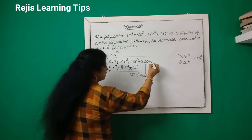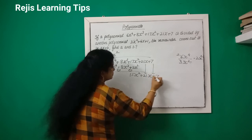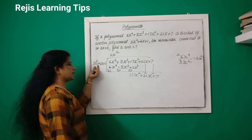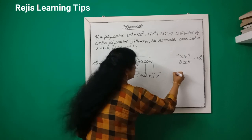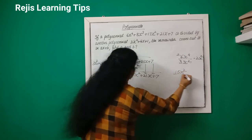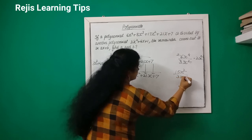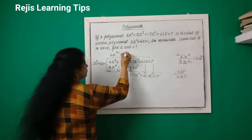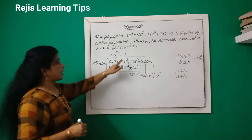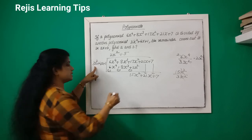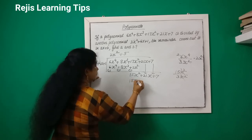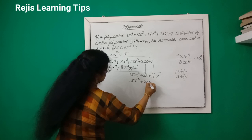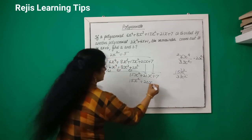We bring down + 7. Now 15x² divided by 3x² gives 5. Then 5 multiplied by 4x gives 20x, and 5 multiplied by 1 gives 5.